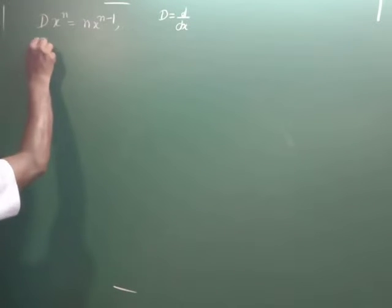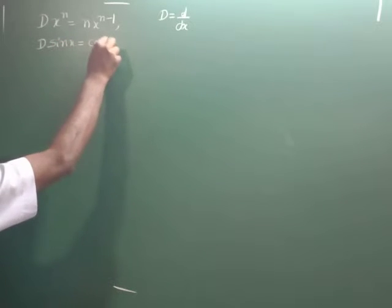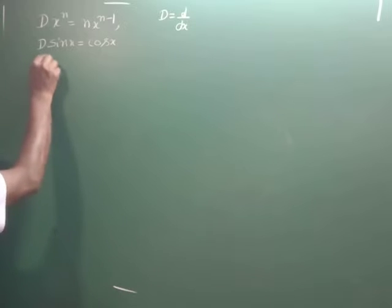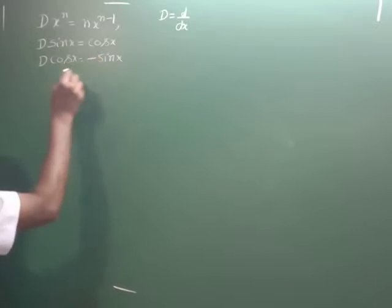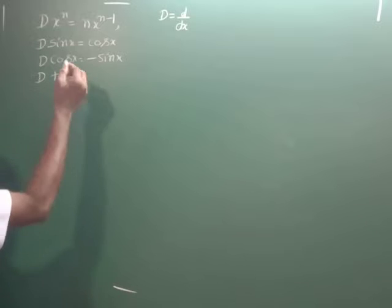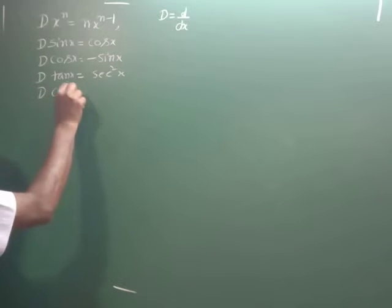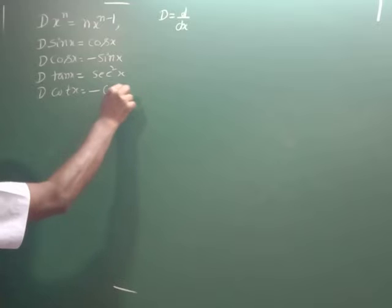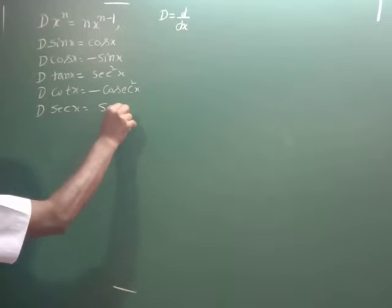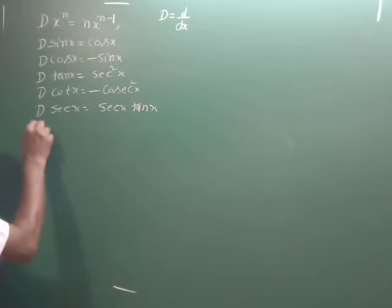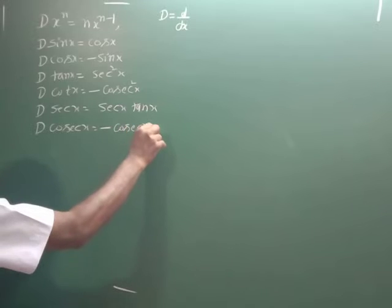Derivative of sin x is equal to cos x. Derivative of cos x is equal to minus sin x. Derivative of tan x is secant squared x. Derivative of cot x is minus cosecant squared x. Derivative of secant x is secant x into tan x. Derivative of cosecant x is minus cosecant x into cot x.